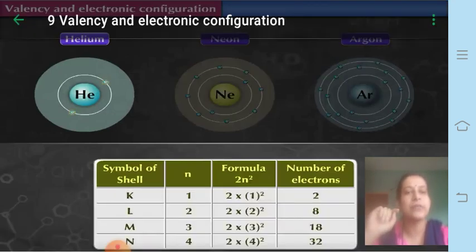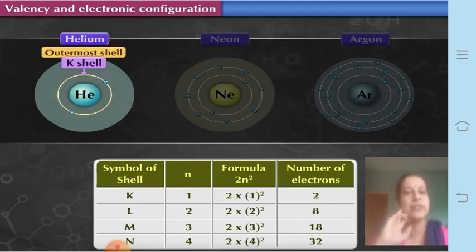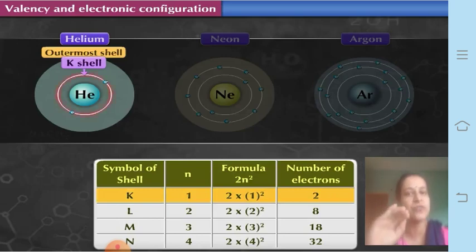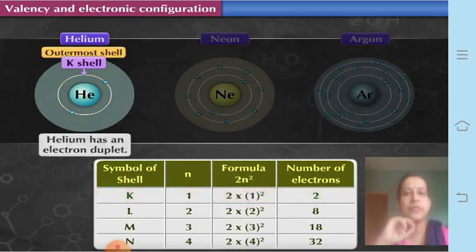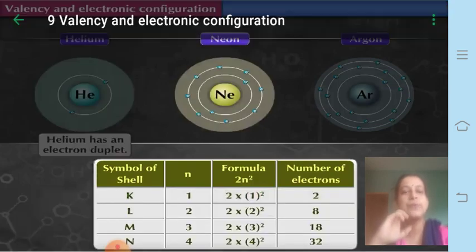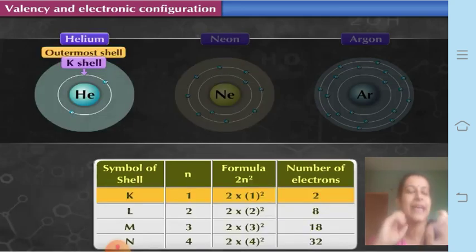These two electrons of helium are accommodated in the first shell, also called the K shell. The K shell has a maximum capacity of two, according to the formula 2n². This is also called the outermost shell because only two electrons are there and both are accommodated in the first shell. It does not require any other shell.